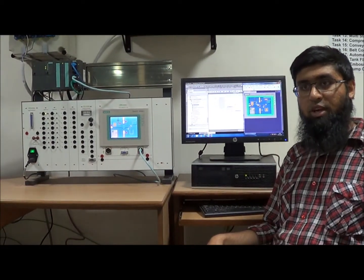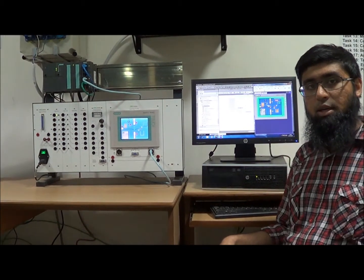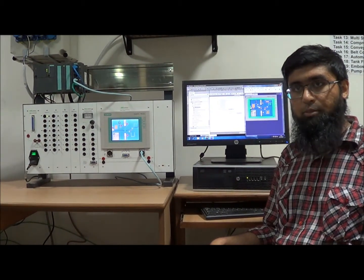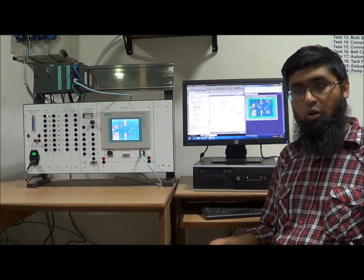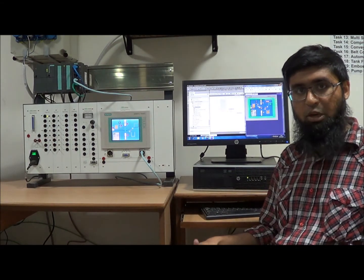Now moving on to our project, we have decided to automate an embossing plant. Well, embossing is the process of producing sunken or raised designs on sheet surface, be it metal or paper, by application of heat and pressure.